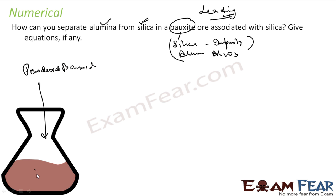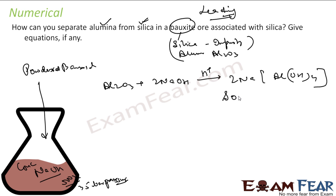So we take the powdered bauxite and mix with sodium hydroxide concentrated at almost 500 Kelvin and 35 bar pressure. What happens is the aluminium oxide is leached out as sodium aluminate. The reaction is: Al2O3 reacts with NaOH in the presence of H+ to get 2NaAl(OH)4, that is sodium aluminate. But silica will again react with NaOH and form Na2SiO3 - it is sodium silicate, it is a slag.